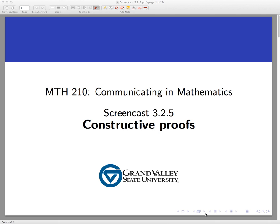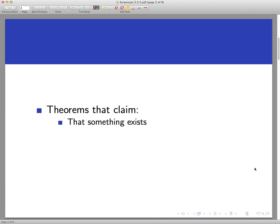So what is a constructive proof? In a constructive proof, we're dealing with theorems that claim one of two things. First, a theorem that claims that something exists, or a theorem that claims if you're given a certain set of objects, then a certain calculation holds. Either one of these theorems involve things that we could build.